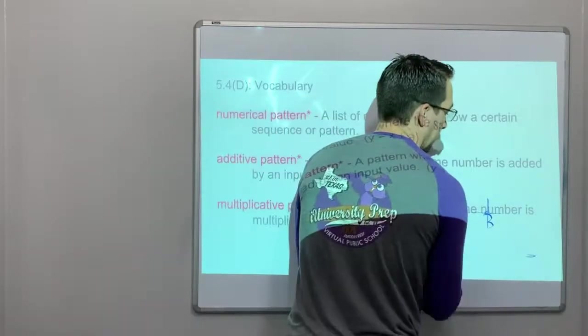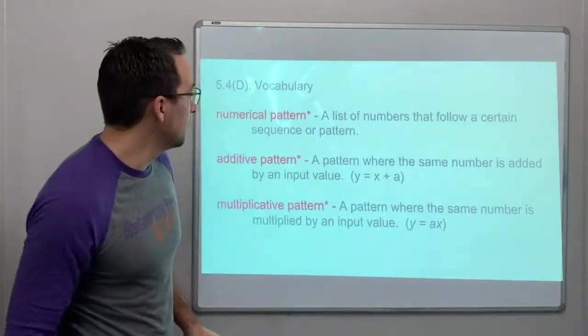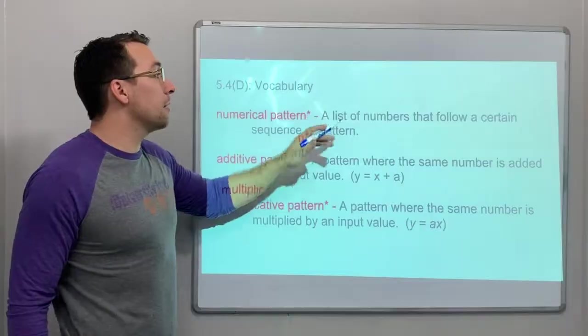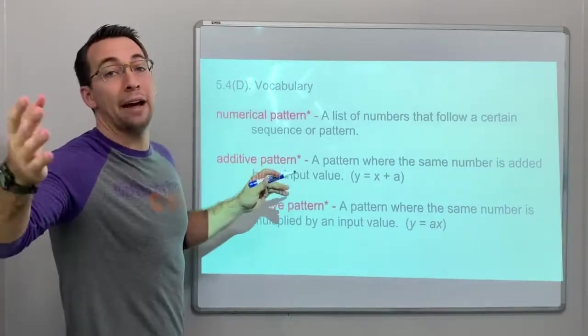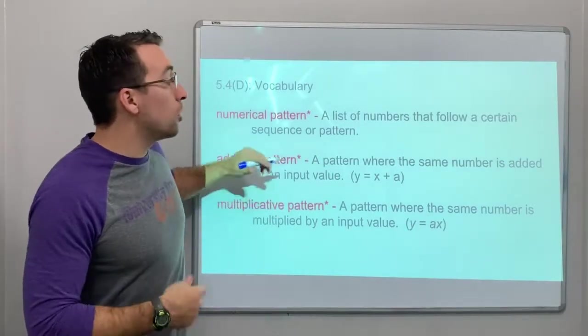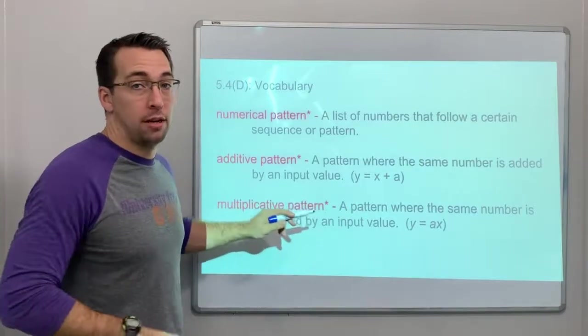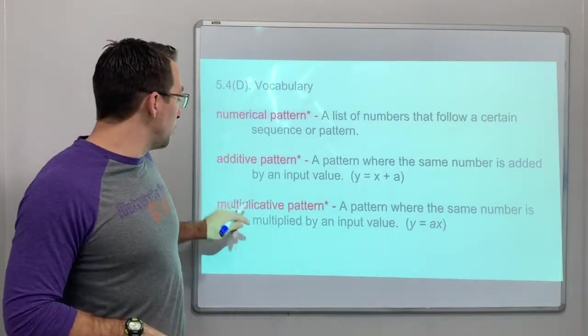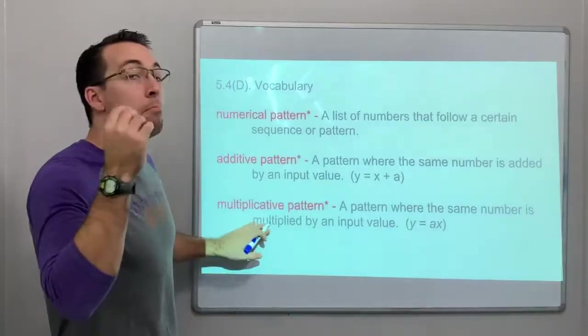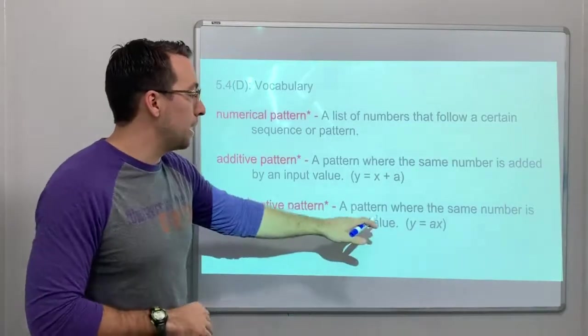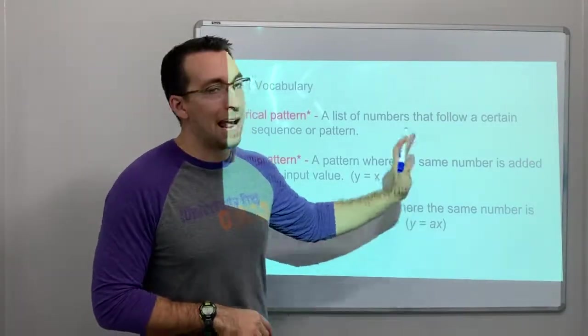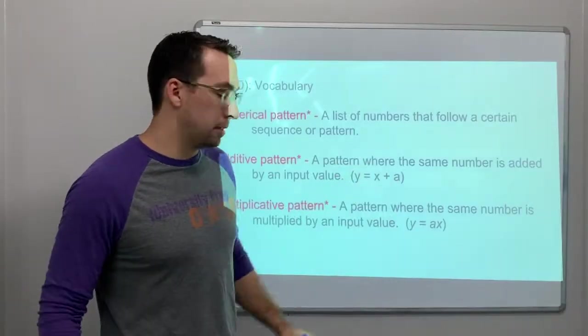Okay, so a numerical pattern. Let's talk about that. A numerical pattern, a list of numbers that follows a certain sequence or pattern. An additive pattern is where you add the same number each time. And then a multiplicative pattern is a pattern where the same number is multiplied by an input value. So y equals a times x versus x plus a.